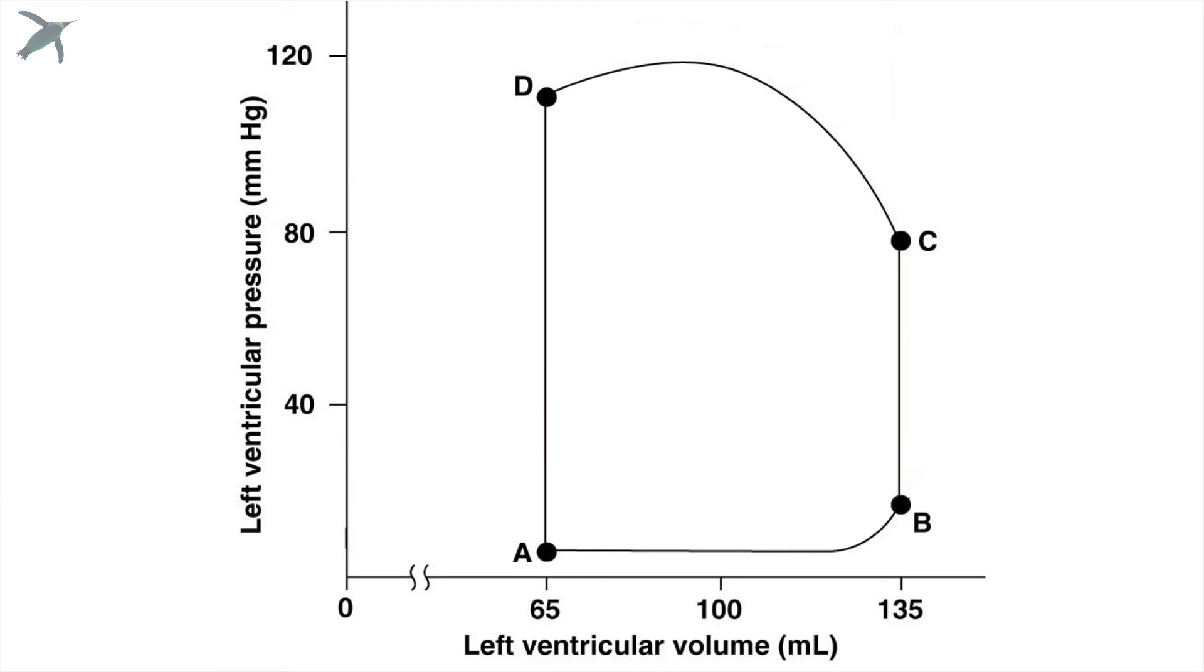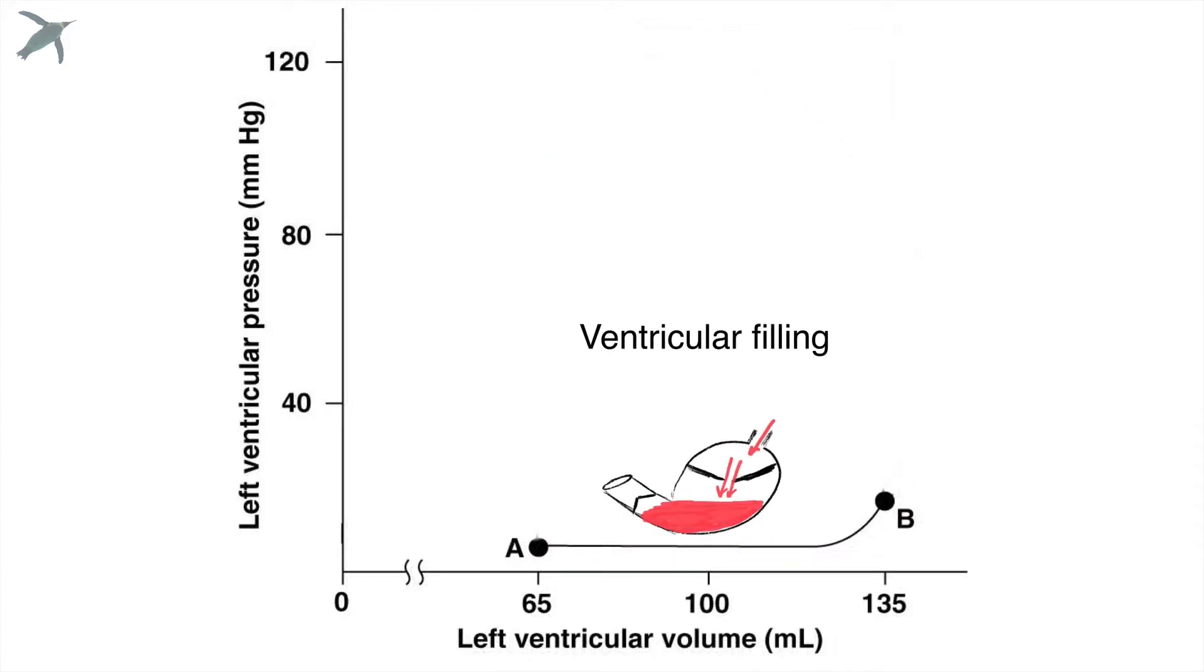This graph shows the relationship between the pressure in the ventricle in millimeters of mercury and the volume of blood in the ventricle in milliliters. So taking those four basic stages that we just looked at, let's put them on the graph. From A to B, we're filling the ventricle. You notice the volume is increasing, but the pressure really doesn't change all that much.